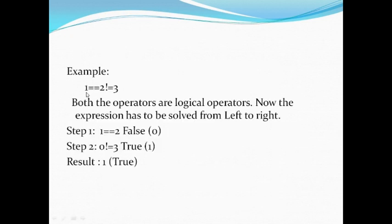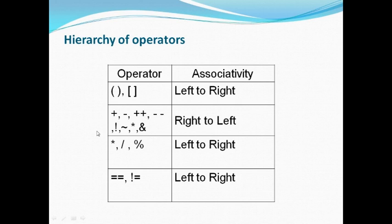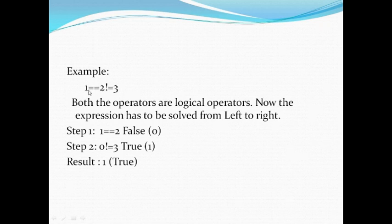Consider the expression: 1 == 2 != 3. Here, double equal to and not equal to have the same precedence, creating a dilemma about which sub-expression to solve first. Using associativity, since both operators are at the same level, we solve from left to right. First, we solve 1 == 2, which is false and returns 0. Then, 0 != 3 is true. So this expression evaluates to true.